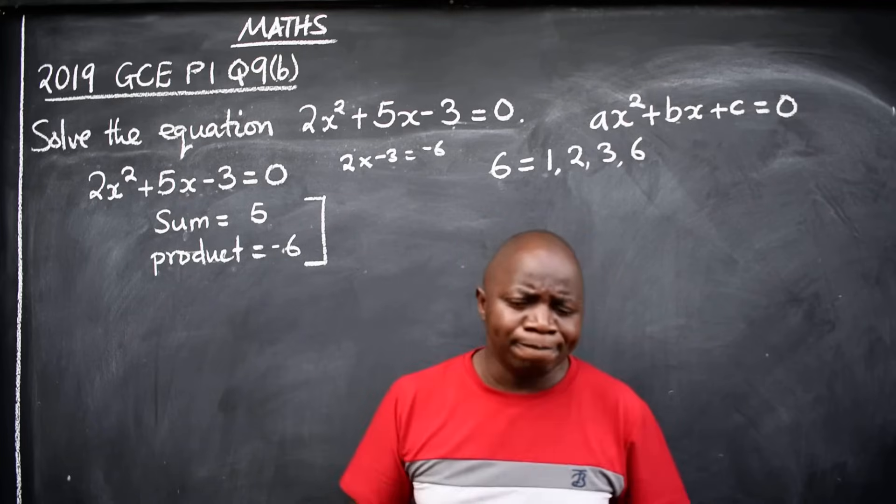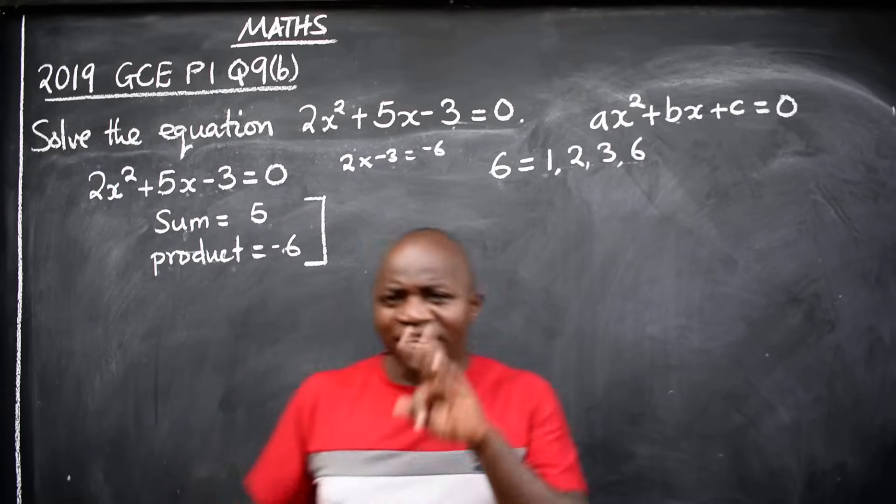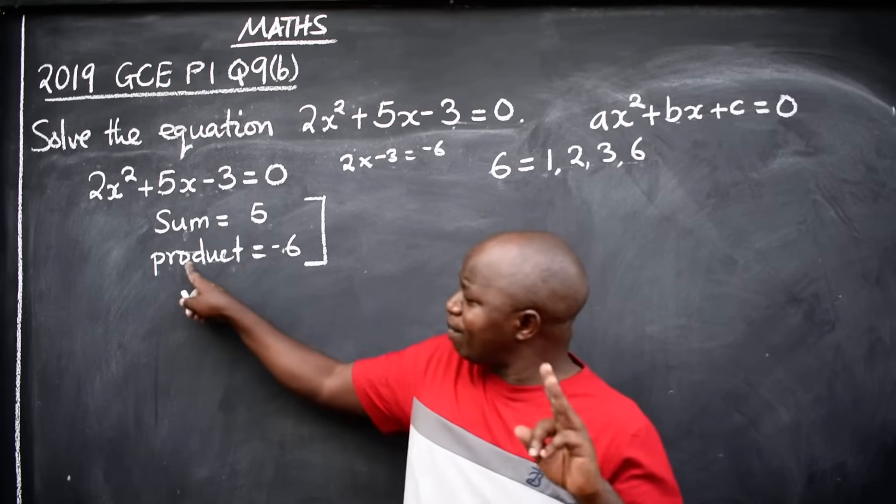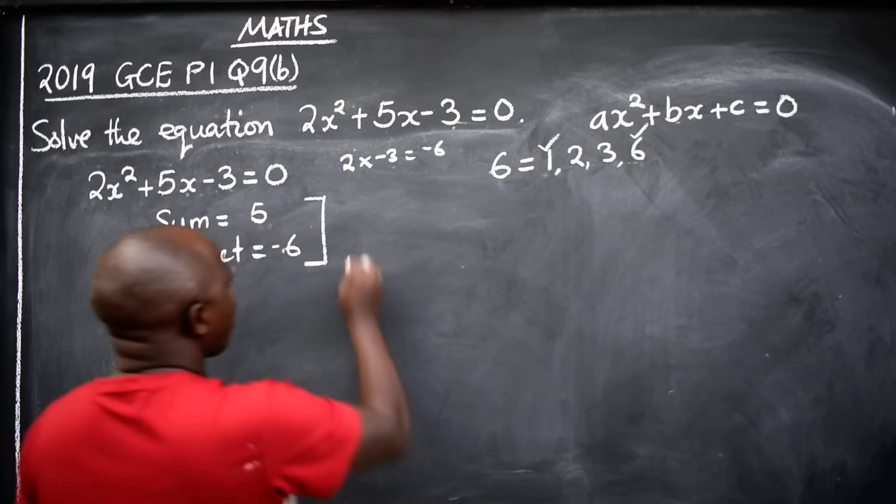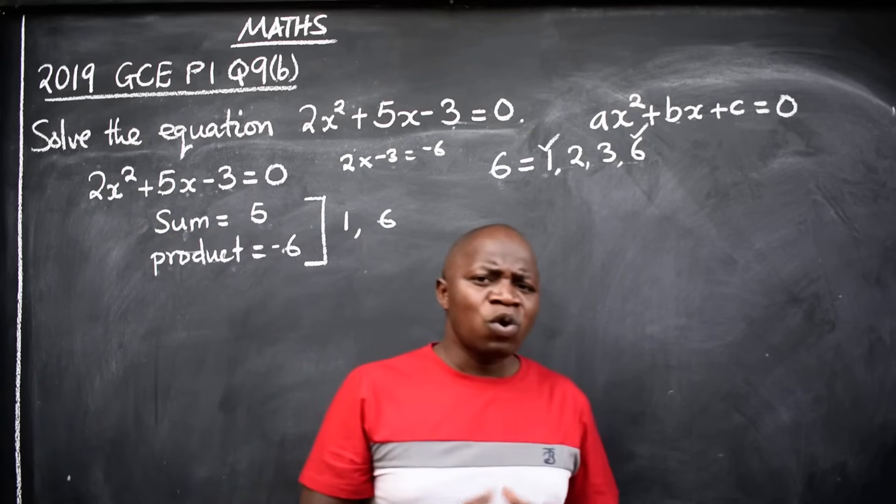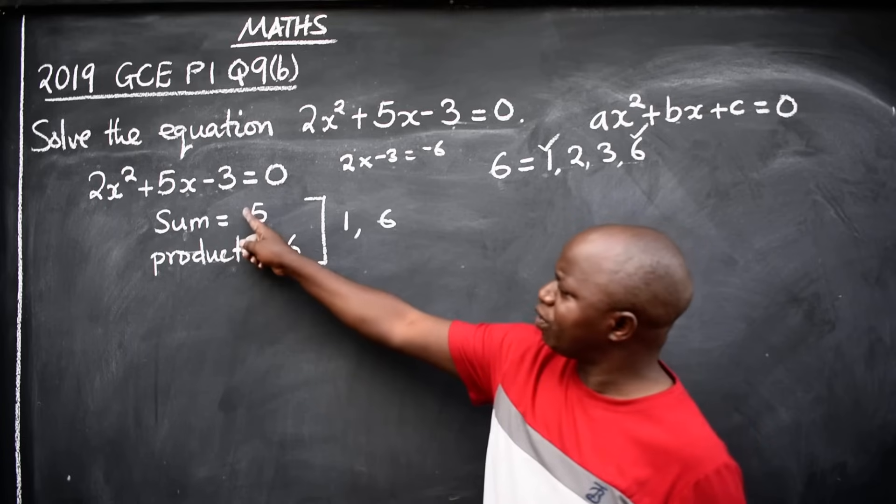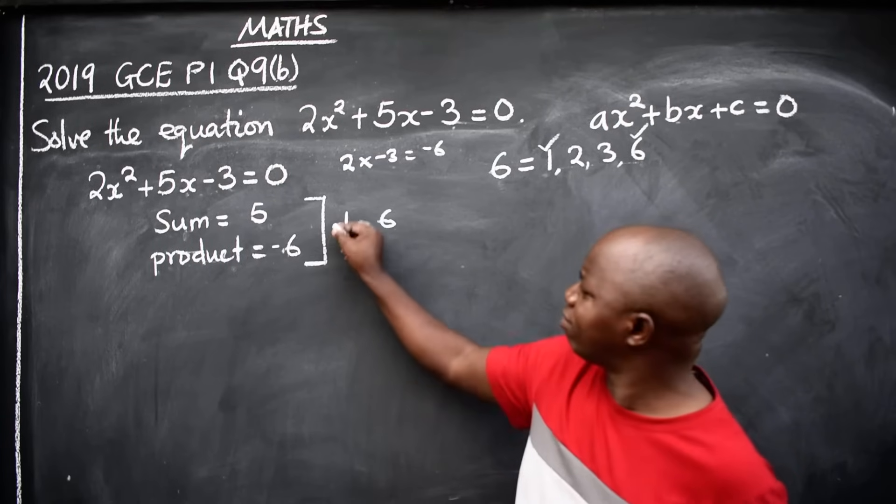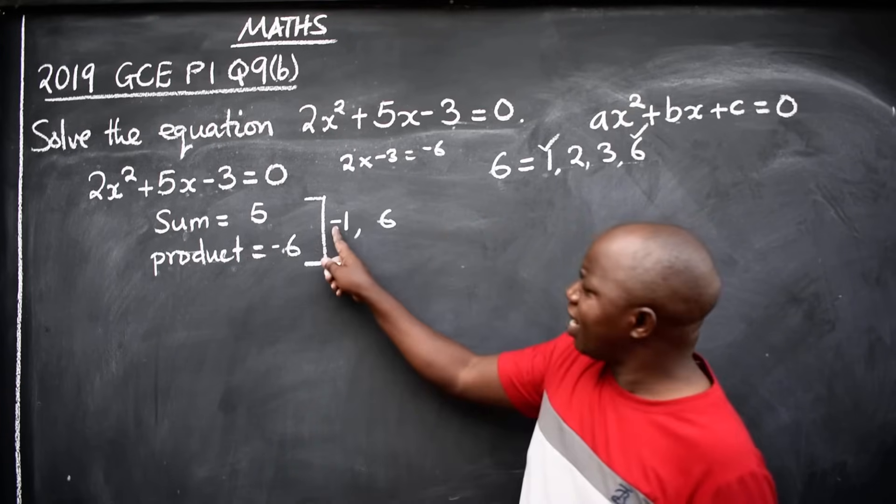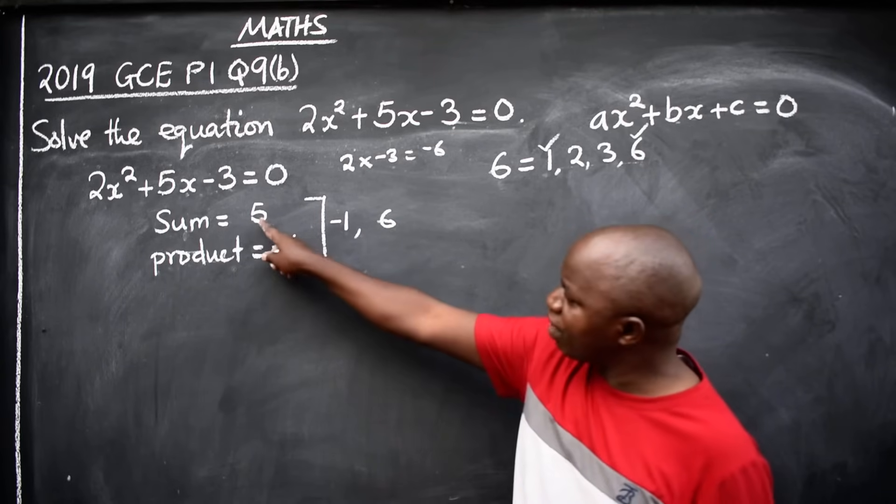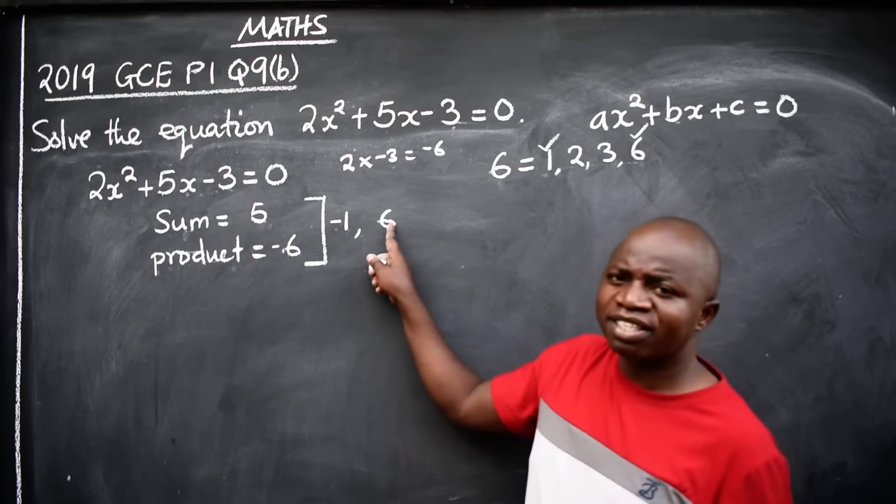Now, what two numbers are we going to get here? Only two. When I add them, they should give me 5. When I multiply, I should get -6. You can agree with me these will be the two numbers: -1 and 6. Since this sum is positive, then the smaller number should be negative. You can now try and see if you are correct. -1 + 6, I'll get 5. -1 × 6, I'll get -6.